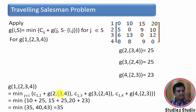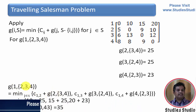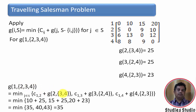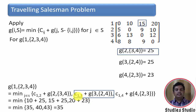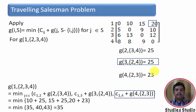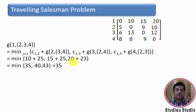C_12 is 10 and g(2,{3,4}) is 25, so that gives 35. Similarly C_13 is 15 and g(3,{2,4}) is 25, and C_14 is 20. The minimum is 35, confirming the minimum cost of travel. This matches the brute force result we found earlier.